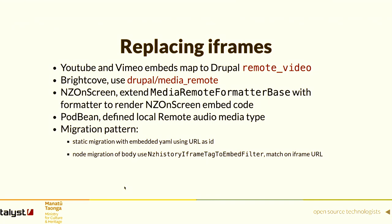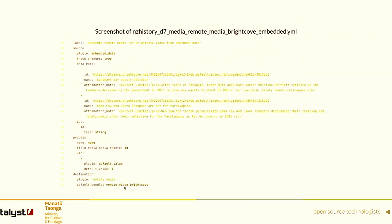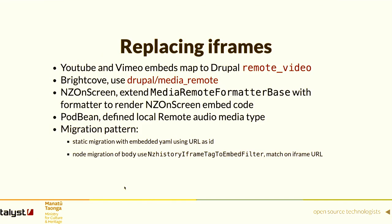We ended up with a fairly common pattern where in some cases we'd define the intended media for Drupal 10 as a static migration — defining YAML to describe the media you want to create in Drupal 10, based on SQL queries on Drupal 7 to identify the handful of instances. These were indexed by URL, so during node migration when parsing body content, we could detect the URL, find the matching Drupal 10 media, and generate a media embed based on the entity UUID.